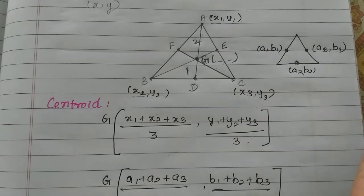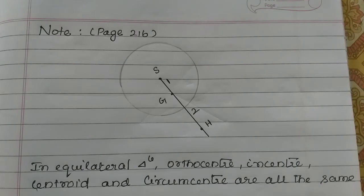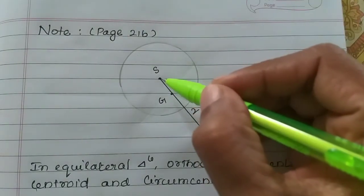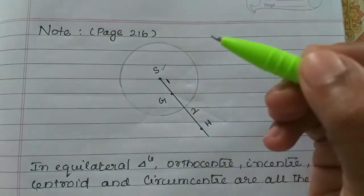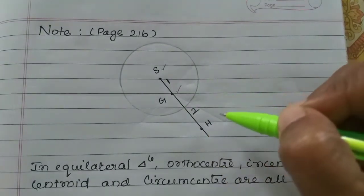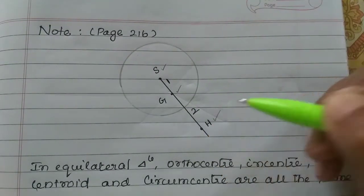Let's look at the note — page number 216. It says we want to write a line. In geometry: S is the circumcenter, G is the centroid, and H is the orthocenter.